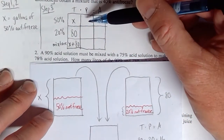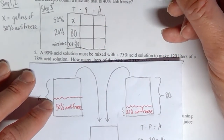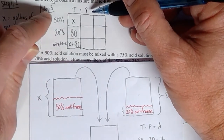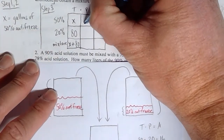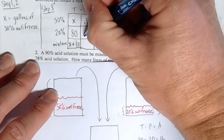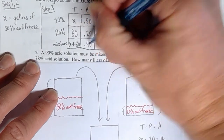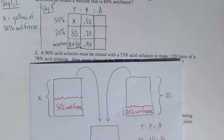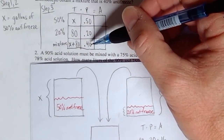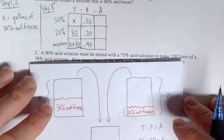The second column is the percentages. We take our three percentages — 50, 20, and 40 — and convert them to decimals: 50 divided by 100 gives 0.50, 20 divided by 100 gives 0.20, and 40 divided by 100 gives 0.40. We convert to decimals because these will go inside an equation and we don't want the percentage symbol there.